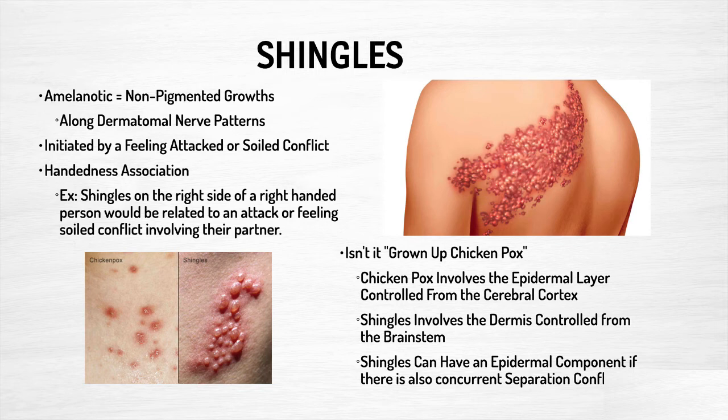Chicken pox involves the epidermal layer — that upper layer of the skin — and it's controlled from the cerebral cortex. Dr. Hammer did many studies and looked at different people that had shingles and chicken pox. He found every time there was the correlation with the epidermis, chicken pox is controlled from the cerebral cortex — that's where the DHS will be as seen on CT scan. Shingles involves the brainstem, and that's where the DHS will be. So they're two separate types of problems with different conflict shocks.